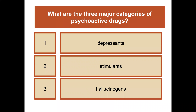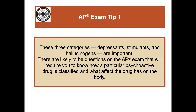The three major categories of psychoactive drugs are depressants, stimulants, and hallucinogens. This is really important to remember. If you are taking the AP exam, these three categories are important and likely to be questioned. Questions will require you to know how a particular psychoactive drug is classified and what effect that drug has on the body.